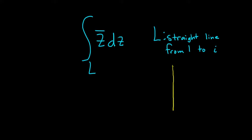So if we draw a picture, here is 1 and here is i. So our contour is this little line segment here. The first thing we want to do is parametrize this line segment.